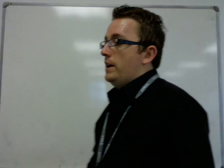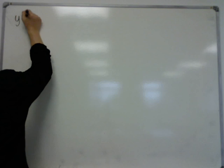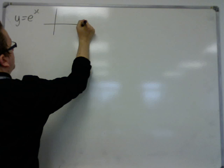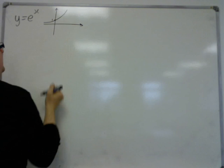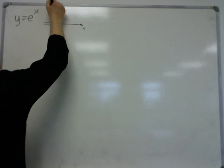So, let's start off with y is equal to e to the x, so that we know exactly what that looks like. y is equal to e to the x looks something like this, okay, so here's the x-axis and the y-axis.